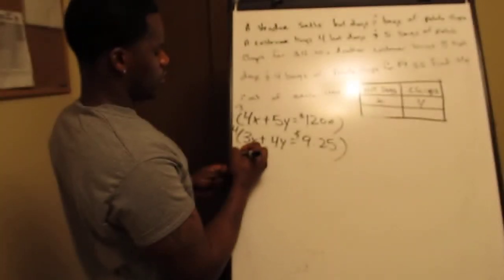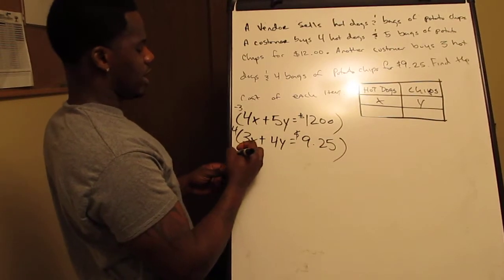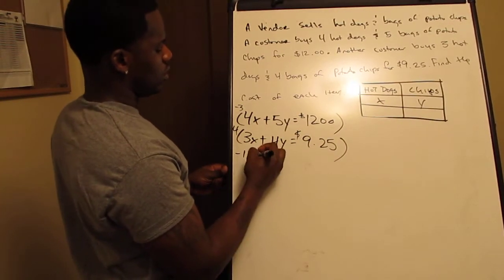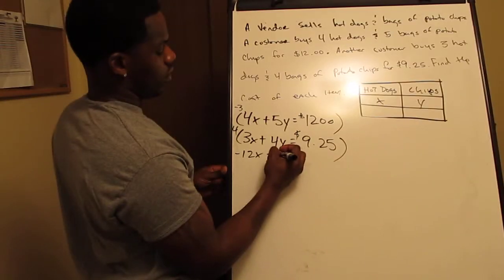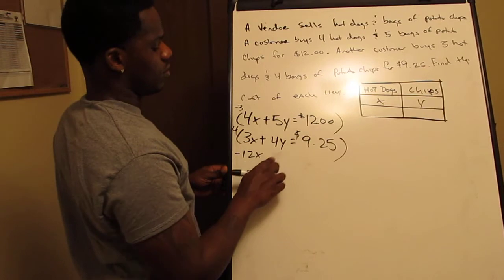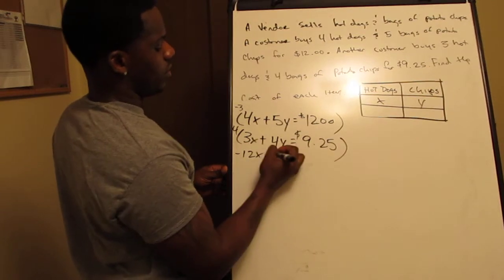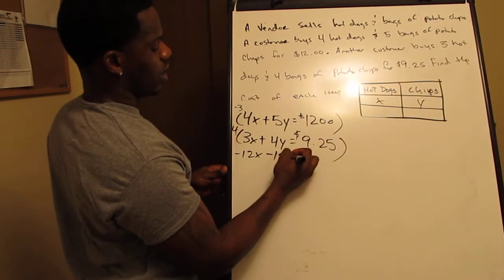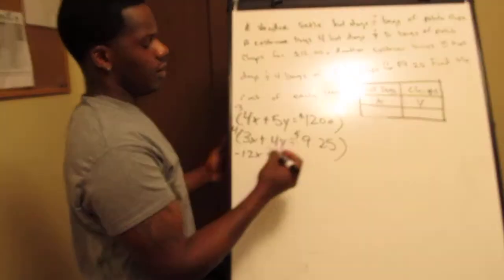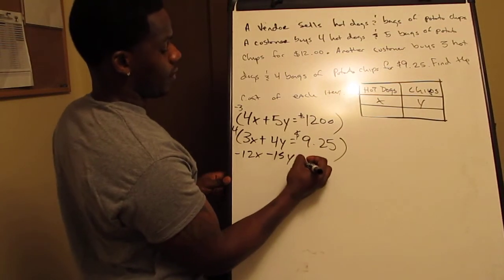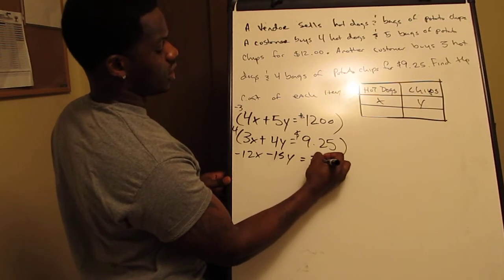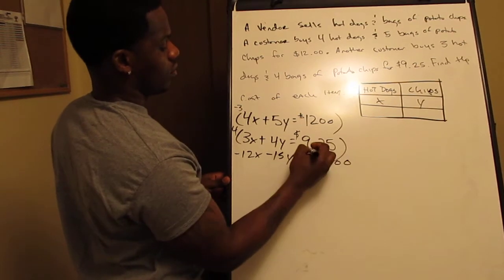Multiplying four by negative three gives us negative 12X, and negative three times 5Y gives us negative 15Y. So that equation becomes negative 12X minus 15Y equals negative $36.